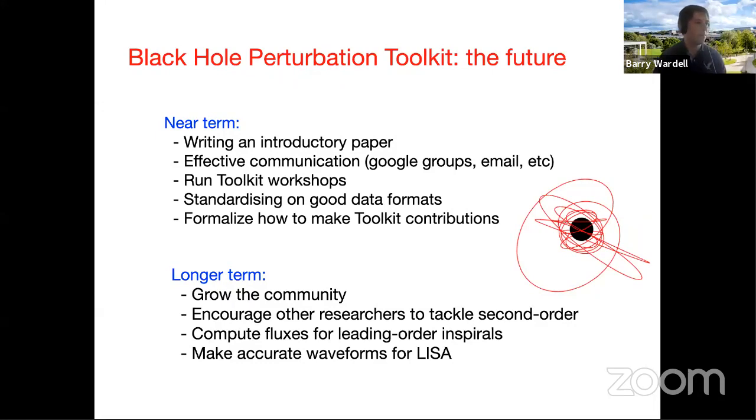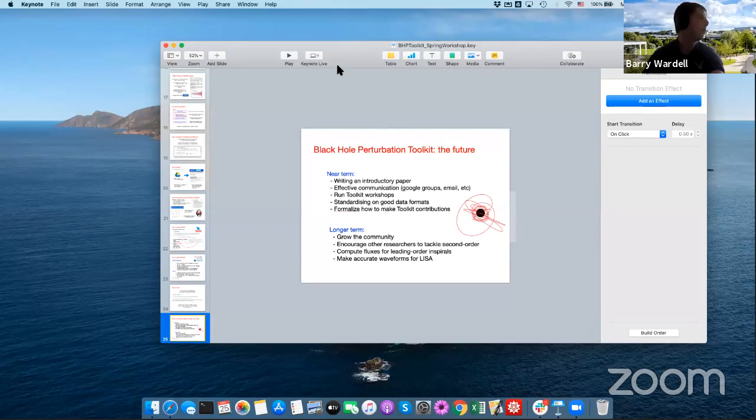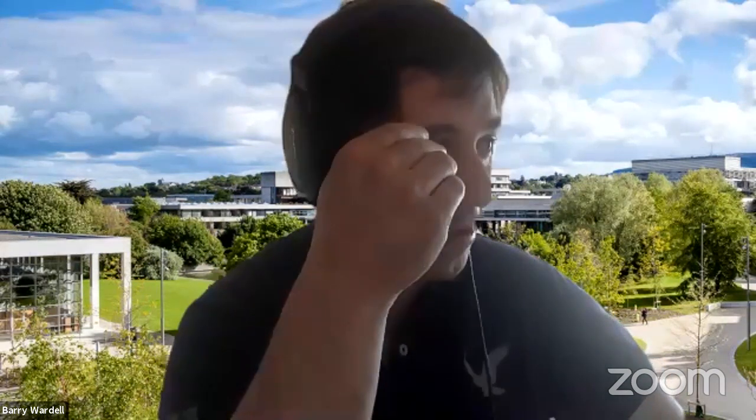There are a few questions in the chat. On the question about circularized orbits: for comparable mass binaries you'd expect orbits to circularize, but that doesn't happen for EMRIs — there are studies suggesting eccentricities up to about 0.7 for EMRIs. On plans to translate Mathematica packages to Python: there are some plans to do that, and it's something we could discuss on Wednesday's developer day.